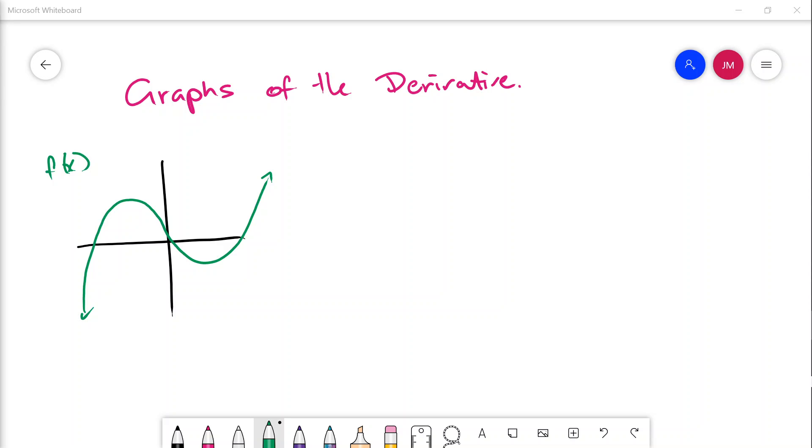In this lesson we're going to be looking at the graphs of the derivative. For example, I've just put a function here and sketched it, and we can tell that it's a cubic function. When we're talking about the derivative, remember we're looking for the gradient of the tangent at any point along this function.